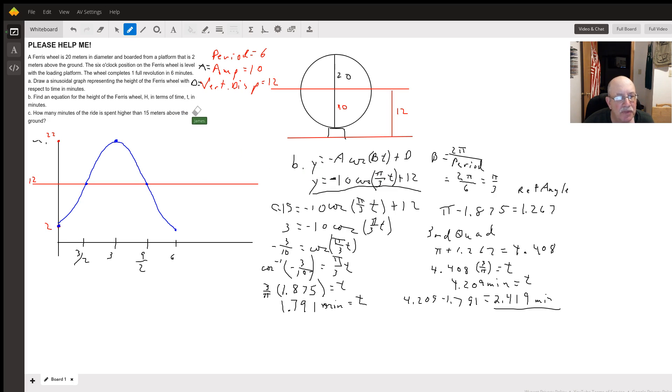They want to know between what times, or how long, is this Ferris wheel above 15 meters. So we need to figure out 15 meters is going to probably be up here somewhere on this side, and then it's going to be 15 meters over here on this side. Okay, so if we set our equation equal to 15, we get 15 equals negative 10 cosine π over 3 times t plus 12.